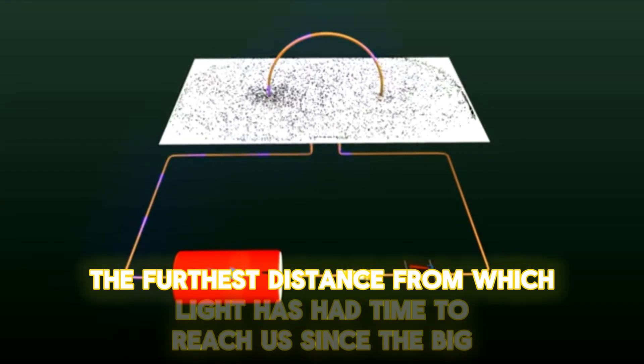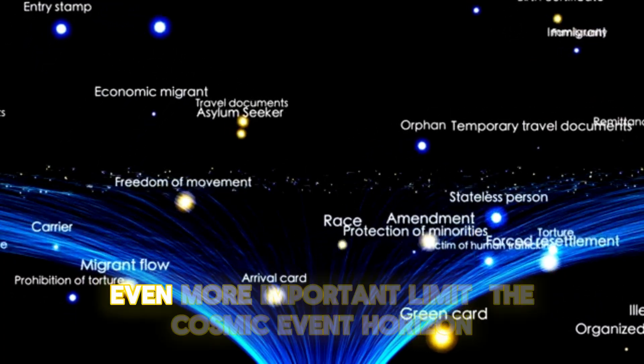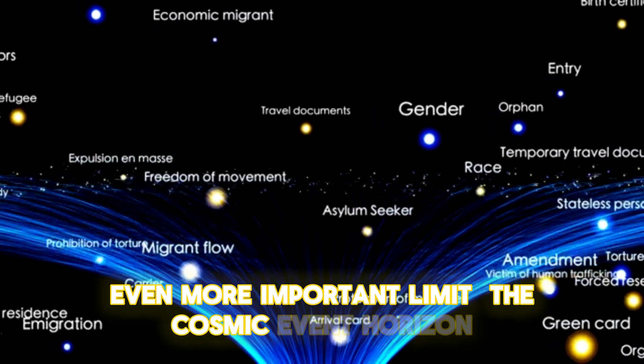The furthest distance from which light has had time to reach us since the Big Bang. But there's another, even more important limit: the cosmic event horizon.